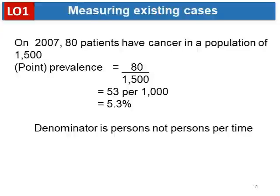Now we want to measure existing cases, which refers to prevalence. Given 80 patients with cancer in a population of 1,500, we calculate prevalence as 80 divided by 1,500, which equals 53 per 1,000, or 5.3%. In prevalence, the denominator is the total population, not person-time — unlike incidence, prevalence does not require a time dimension in the denominator.